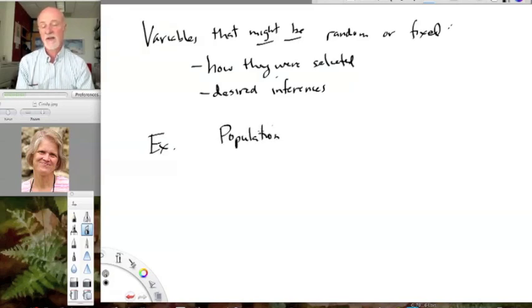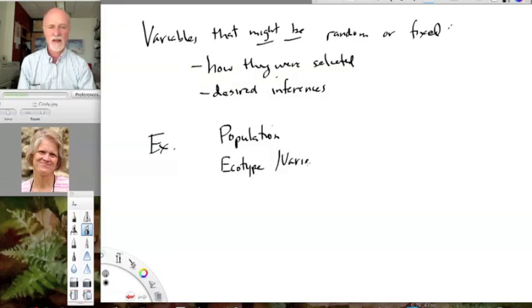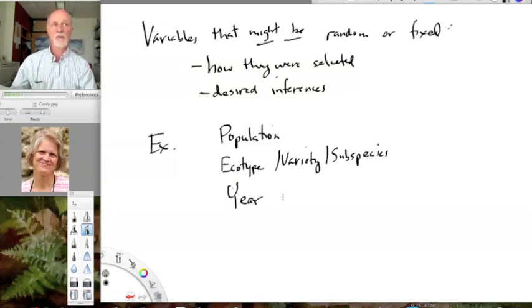So examples. Population. You might be interested in a particular population or set of populations. And you want to talk about those. Or you might be interested in extrapolating to all populations. In fact, in general, groupings that are sort of genetic groupings, genotype, variety, subspecies. Sometimes you will be interested in those specific entities, just like you are with species. But sometimes you'll just be interested in group-to-group variation within a species. And then you might randomly choose ecotypes, varieties or subspecies. So year. Again, you don't really choose years, but you might have a population of years. And if you think they are representative of a larger group, you could treat it as random. But you might also treat it as fixed.